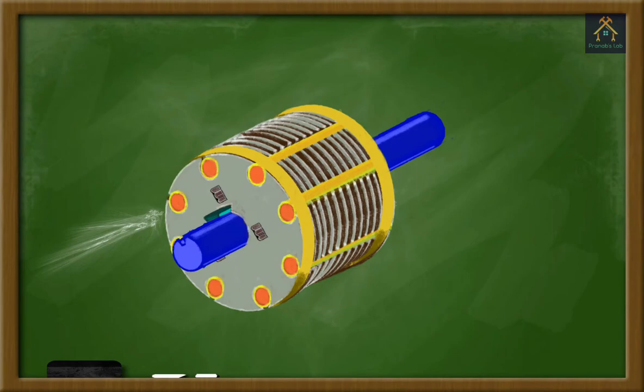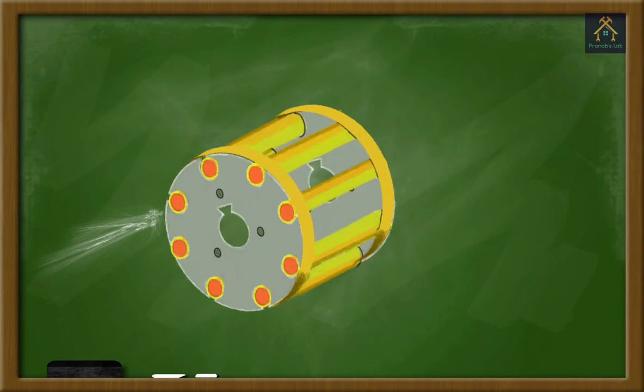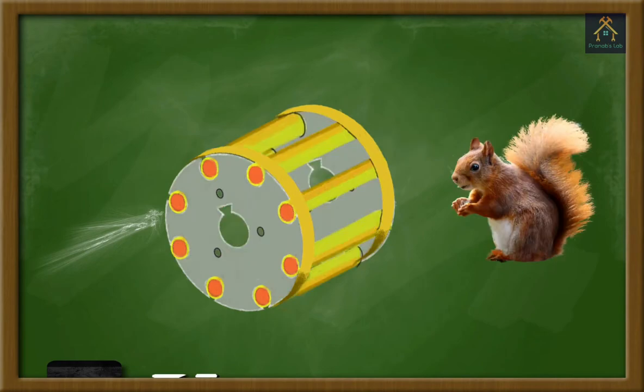Now a question arises: why is the rotor called the squirrel cage rotor? If we remove all those things - shaft key, screws, and internal lamination, etc. - then the structure will look like this.